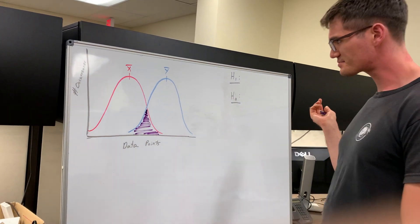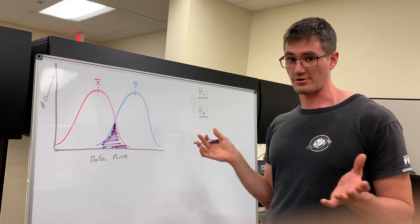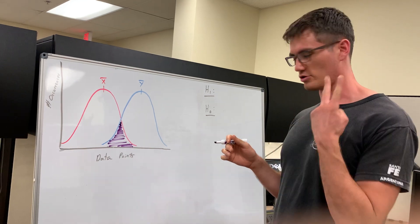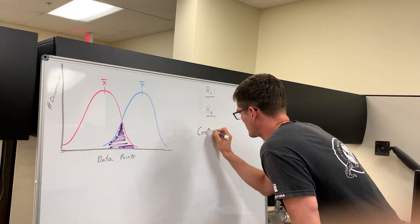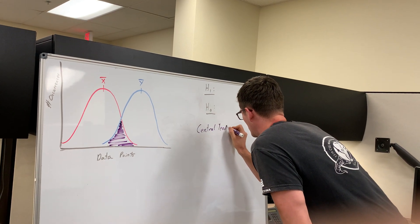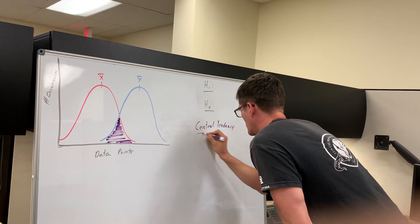So in other words, t-tests and all major parametric statistical tests test two main things. They test measures of central tendency, and they test measures of data dispersion.